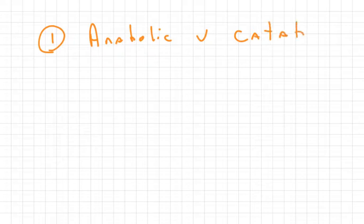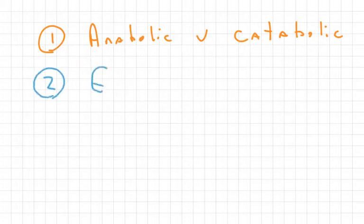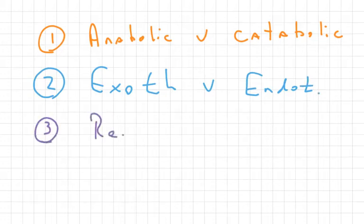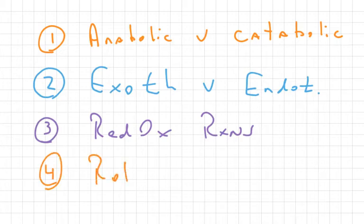If you can understand the following concepts - one, anabolic versus catabolic reactions; second, exothermic versus endothermic reactions; third, redox reactions; and finally, the role of enzymes - you'll be in a good spot in understanding how ATP is produced.